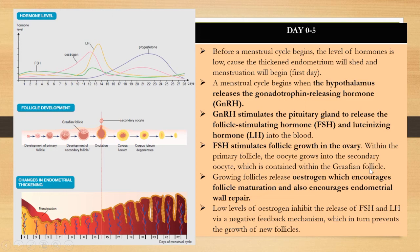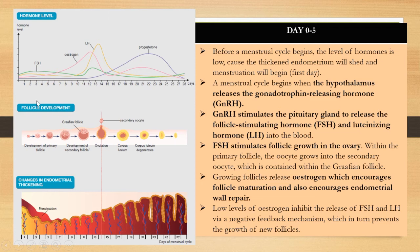Within the primary follicle, the primary oocyte grows into a secondary oocyte contained within the Graafian follicle. The growing follicle releases estrogen, which encourages follicle maturation and repair of the endometrium wall. The low level of estrogen at this stage inhibits the release of FSH and LH via a negative feedback mechanism, which in turn prevents the growth of new follicles.